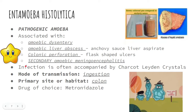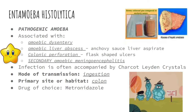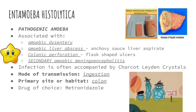Disease associations are recall questions in the board exam. First, we have amoebic dysentery. Second is amoebic liver abscess, which is characterized by an anchovy sauce-like liver aspirate — similar in appearance to the sauce of bagoong. This is a characteristic feature of amoebic liver abscess.